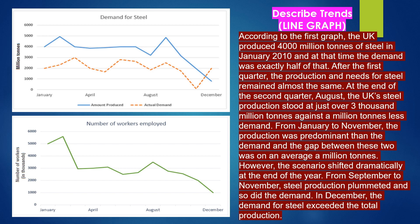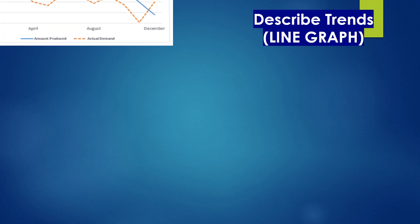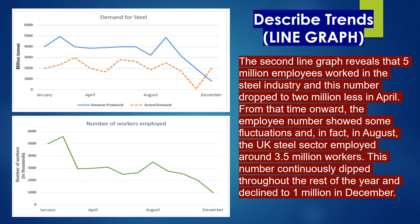However, the scenario shifted dramatically at the end of the year. From September to November, steel production plummeted and so did the demand. In December, the demand for steel exceeded the total production. The second line graph reveals that 5 million employees worked in the steel industry and this number dropped to 2 million less in April. From that time onward, the employee number showed some fluctuations and in fact in August, the UK steel sector employed around 3.5 million workers. This number continuously dipped throughout the rest of the year and declined to 1 million in December.